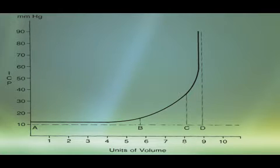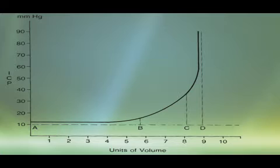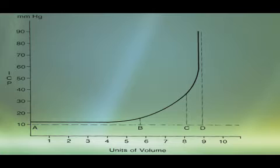From point A to B, even with the addition of small amounts of volume inside the skull, the intracranial pressure is still normal — reflecting high compliance and normal intracranial hemodynamics. From point B to C, the addition of small volumes results in a slight increase in intracranial pressure, still within normal or at the higher range.